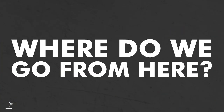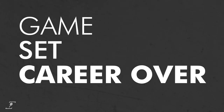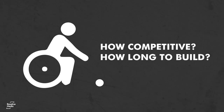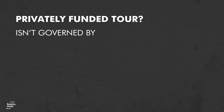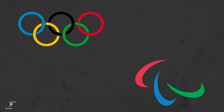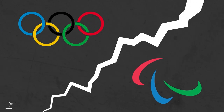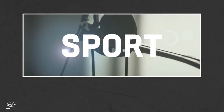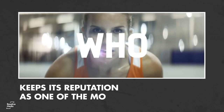So where do we go from here? Well, if nothing changes, it will be game, set and career over for those declassified athletes come the end of the 2021 season, or earlier for those who see the writing on the wall. Other para sports do have a division for newly non-eligible athletes, but how competitive this would be and how long it would take to build up a sizeable circuit of players is open to question. Might we see the emergence of a privately funded tour separate to the existing one that isn't governed by the classification system and allows participation for all? Or do the Paralympics and the Olympics need to work more closely together to find a solution that allows those who fall between the gaps to compete at the highest level? At the minute, there are no clear cut answers, and potentially the only way to find them is to continue to keep the debate open — so that whatever happens in the future, the sport of wheelchair tennis keeps its reputation as one of the most inclusive around.